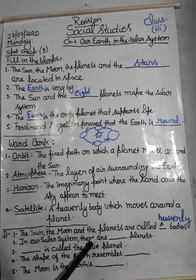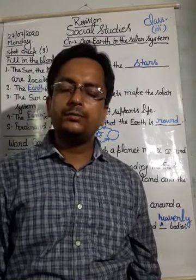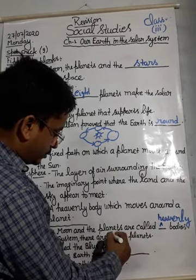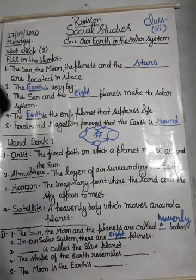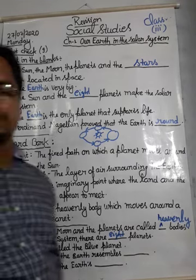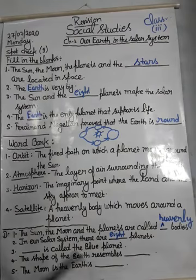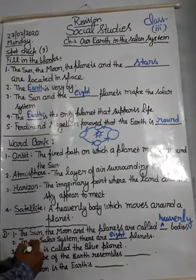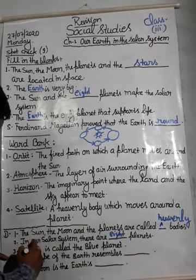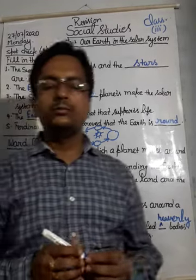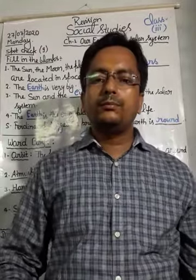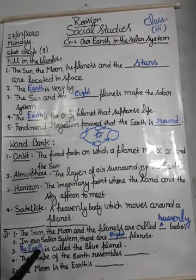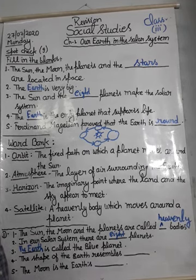And next: in our solar system, there are dash planets. In our solar system, there are eight planets. And next: dash is called the blue planet. Which planet is called the blue planet? The answer will be the earth. The earth is called the blue planet because the maximum part of land is covered with water, and we show water bodies with blue color.